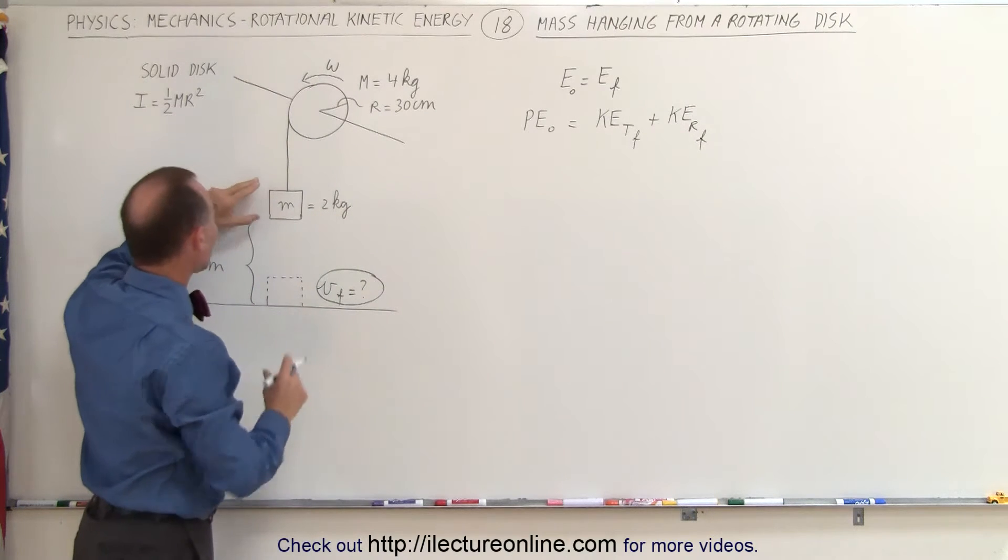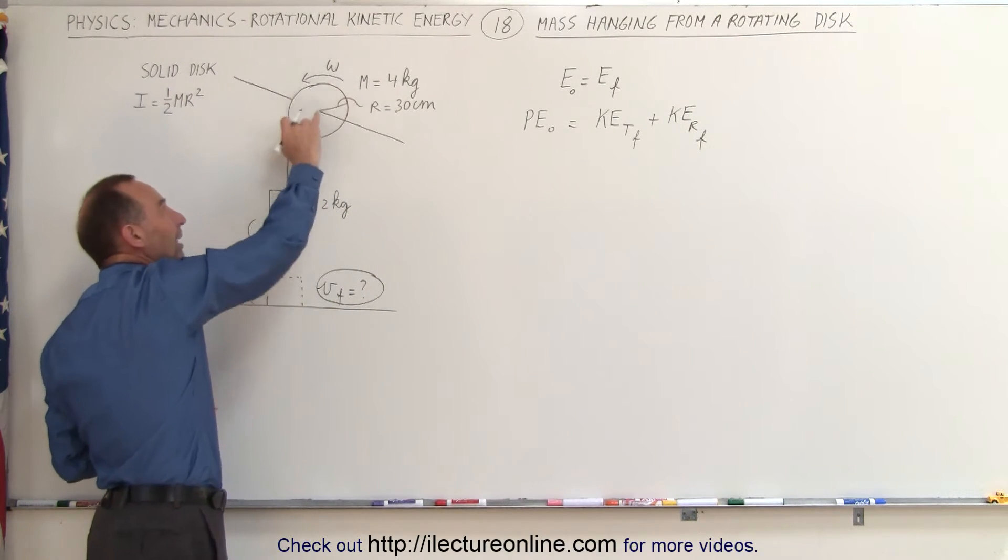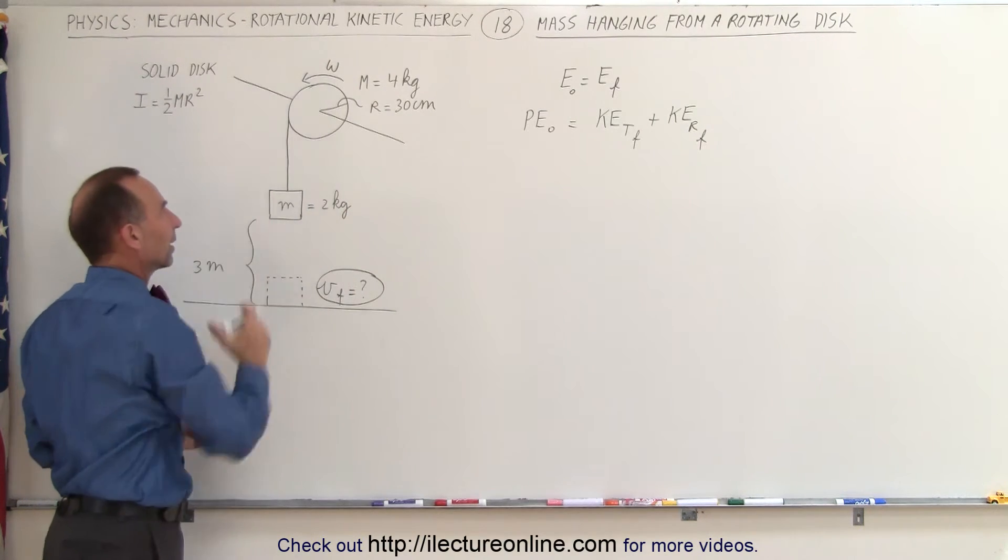So the translational energy will be locked in the object that's coming down this way, and the rotational kinetic energy will be locked up in the disk as it's rotating, because it cannot go anywhere. It's stuck right there in place.